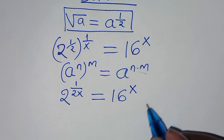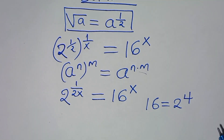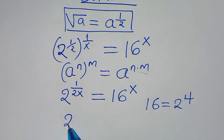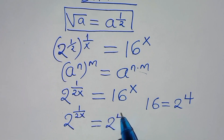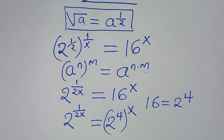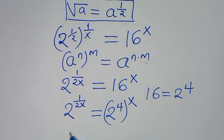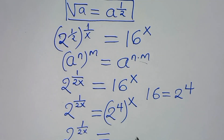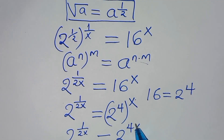From here we can express 16 as 2 to power 4. So this implies we have 2 to power 1 over 2x equal to 2 to power 4 raised to power x, which simplifies to 2 to power 1 over 2x equal to 2 to power 4x.